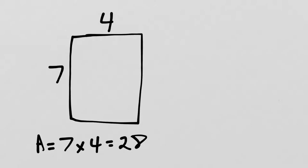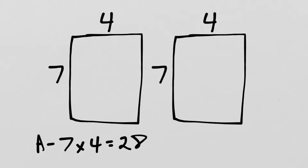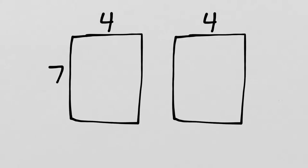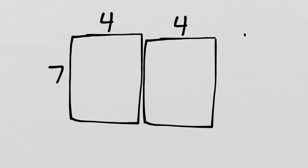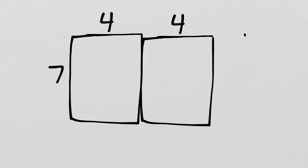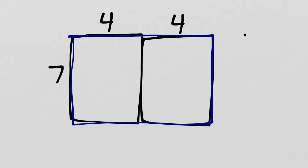Now, what if, instead of having just one of those, what if I had two? Let's imagine that we have a second one just like that. And what if I was to push these two rectangles together? This is now a bigger rectangle made up of the two parts.